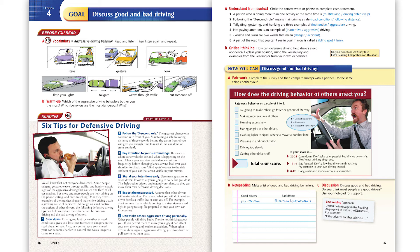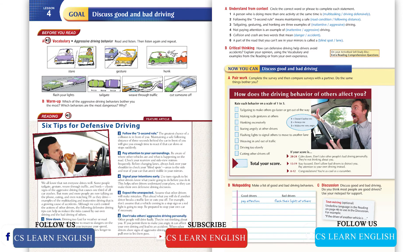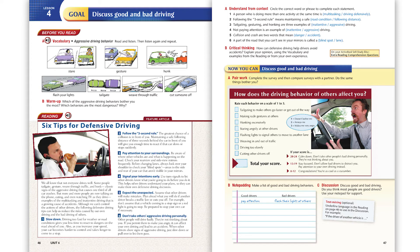Five: Expect the unexpected. Assume that other drivers will make mistakes. Plan ahead — what will you do if another driver breaks a traffic law or cuts you off? For example, don't assume that a vehicle coming to a stop sign or a red light is going to stop. Be prepared to stop your own car if necessary.